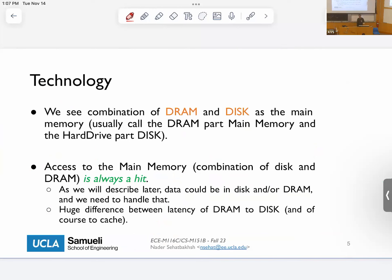When talking about DRAM and disk combined, the data that goes there is always a hit — there is no address that is not available. Whatever you do, the data is always there because you have the entire address space there. Of course, data might be in DRAM or in disk, but when I'm talking about the unified version of main memory, when I say I go to the main memory, the data is always there — there is no notion of miss.